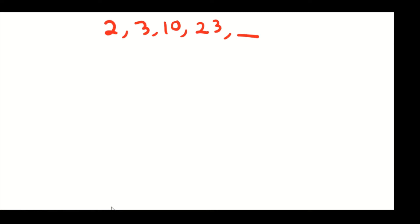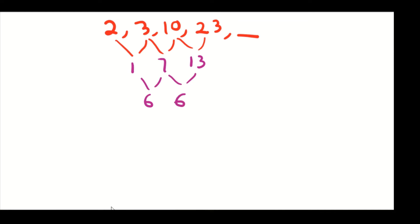The first thing we're going to do is find the first difference of this sequence, which would be 1, 7, and 13. The second difference gives you 6. So we know that the sequence is increasing by 6 units.